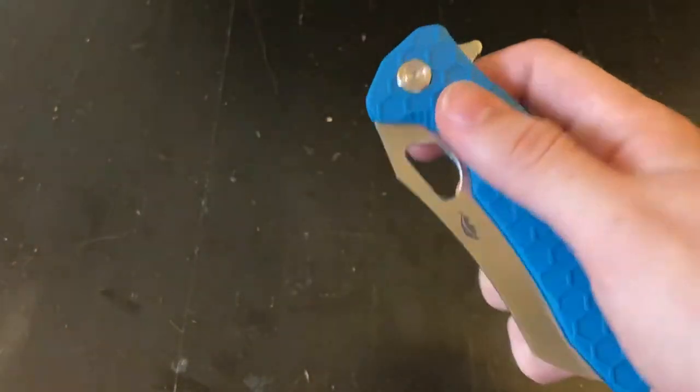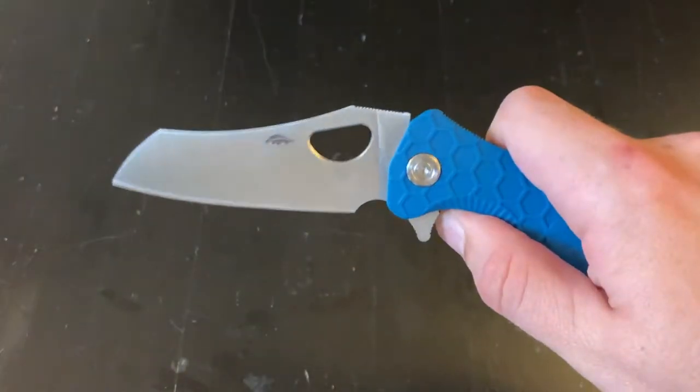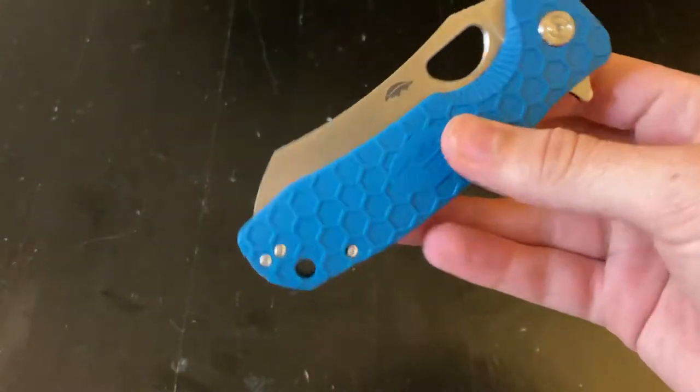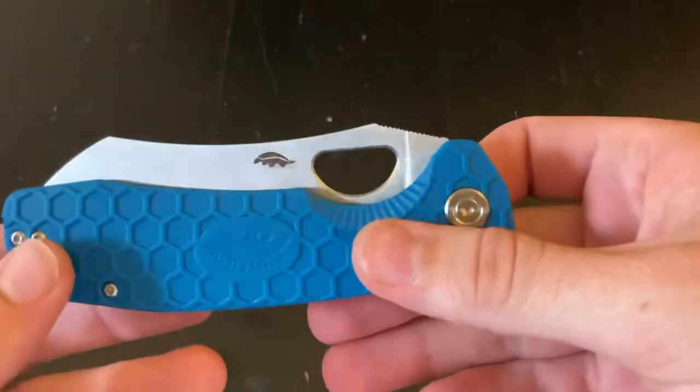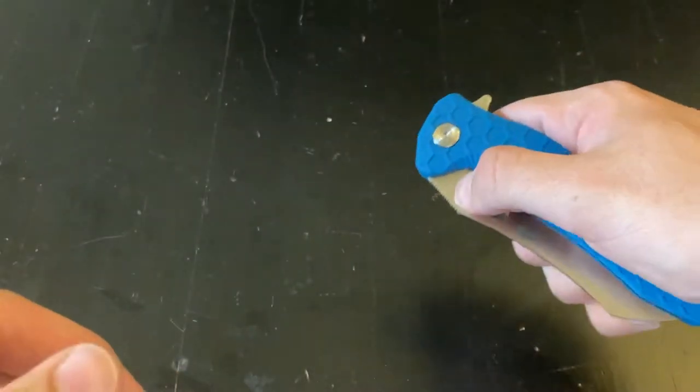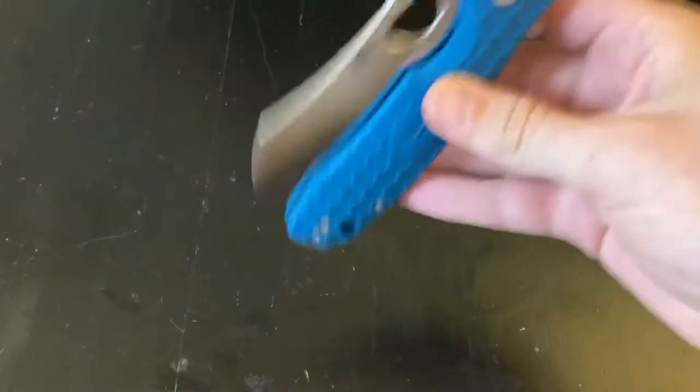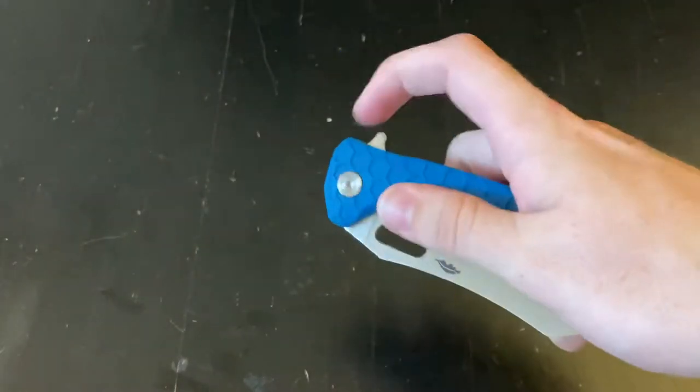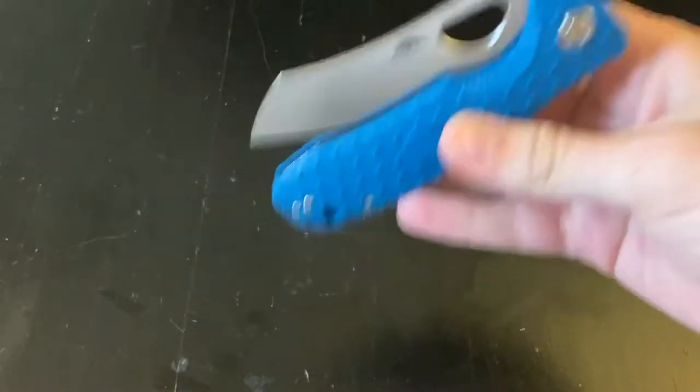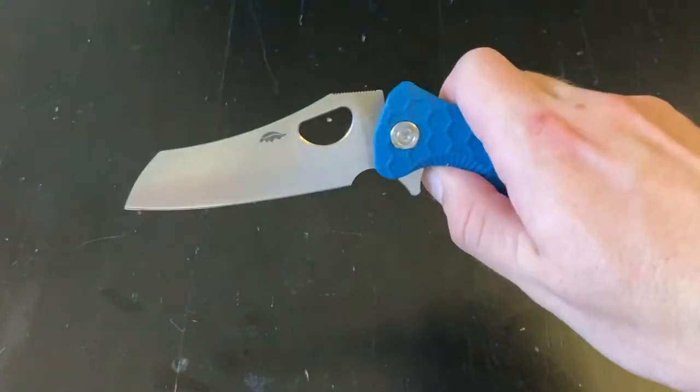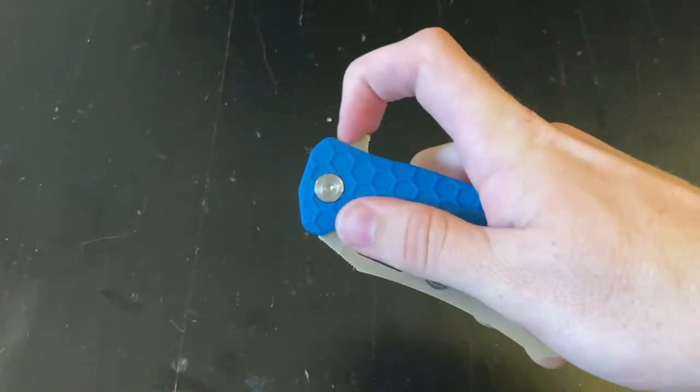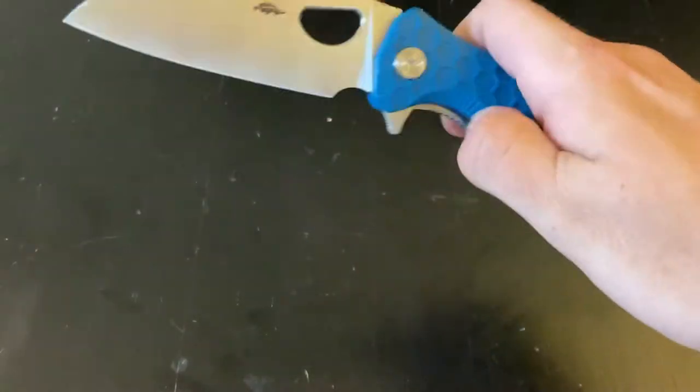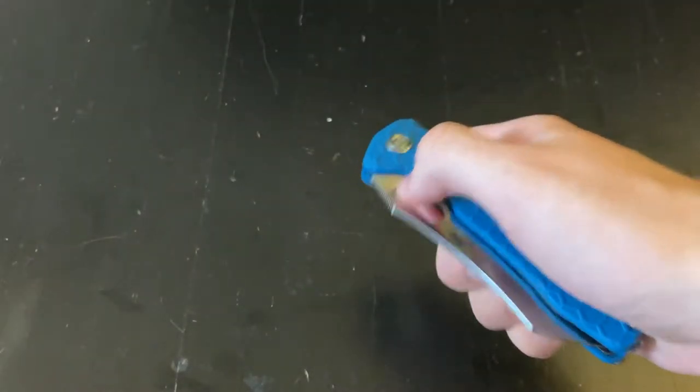This is like new in-box condition. But man, Honey Badgers are just the most fun fidgeting knives out there. You can slow roll it really easily, you can use the flipper tab, you can thumb flick it.